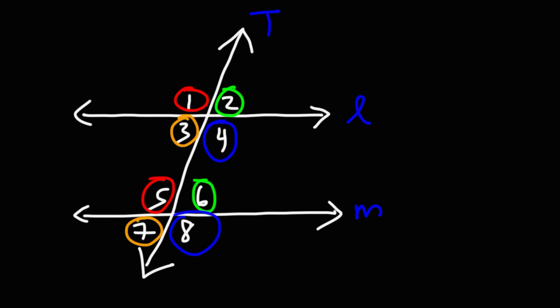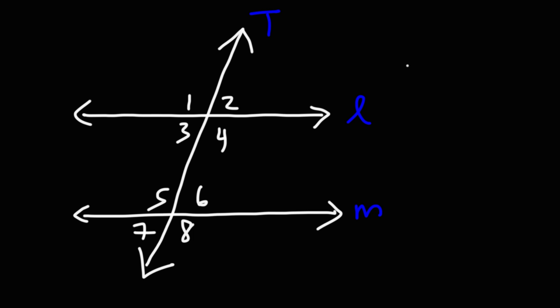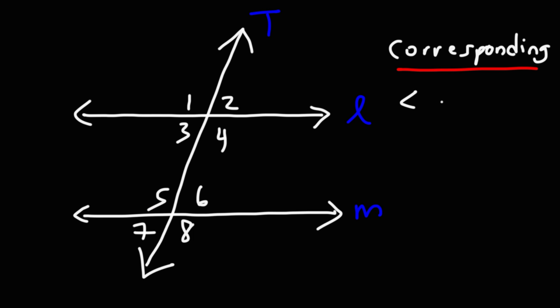For each pair, one is on the outside — the exterior of the two parallel lines — and the other is on the inside, or the interior, of the two parallel lines. What you need to know is that corresponding angles are congruent; they have the same angle measure. So we could say that angle 1 is equal to angle 5.